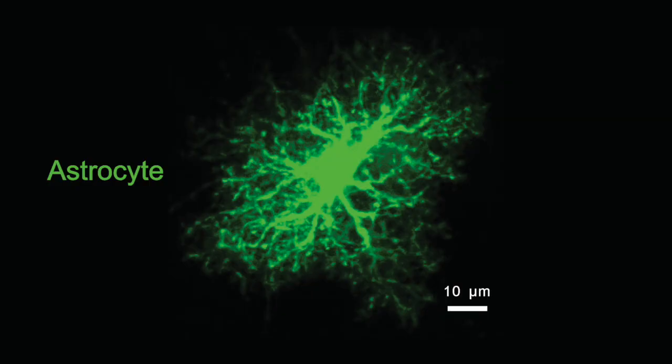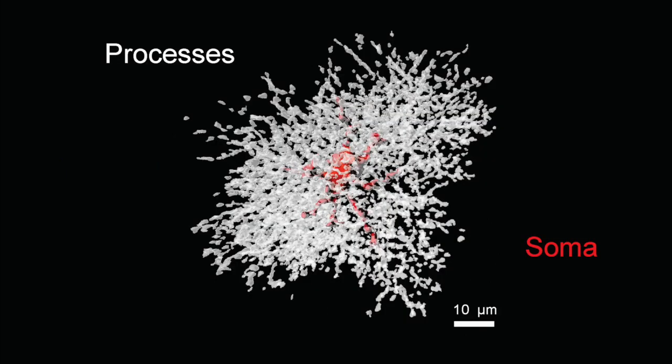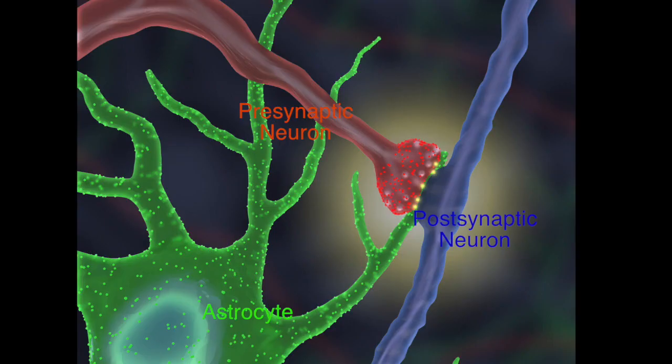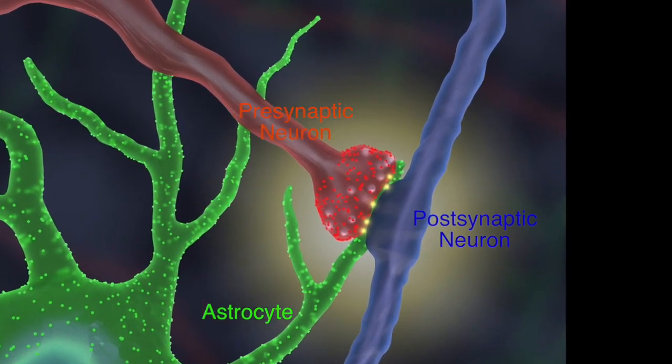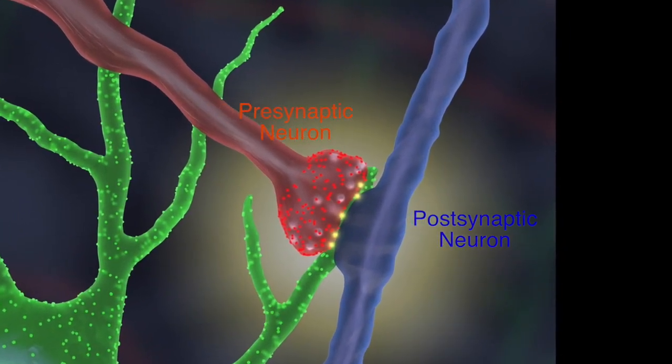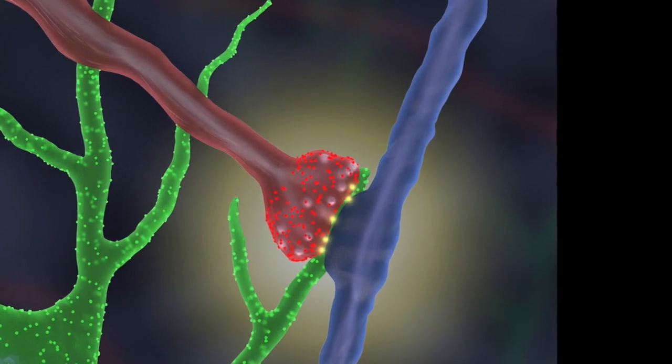Astrocytes are bushy, highly complex, branching cells. Up to 95% of a single cell's volume comprises processes which lack organelles, are devoid of classical markers such as GFAP, and have a high surface area to volume ratio. Astrocyte processes are particularly fascinating because they contact blood vessels, cell bodies, and tens of thousands of synapses in a single cell's territory.